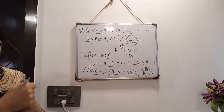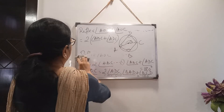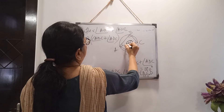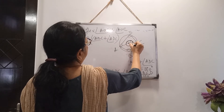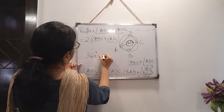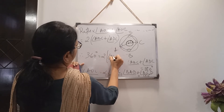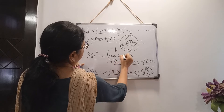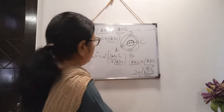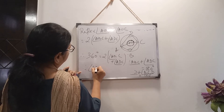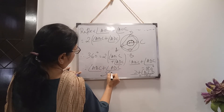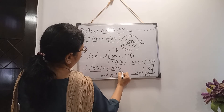You see — reflex AOC plus AOC means the total angle at the center, which is 360 degrees. So on the left-hand side we write 360 degrees equals twice of angle ABC plus angle ADC. From here we get angle ABC plus angle ADC equals 360 divided by 2, that means 180 degrees.